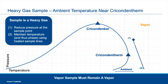For a heavy gas, you're somewhat closer to the phase curve. You can't just reduce pressure — you need to be careful not to cross into the two-phase zone. In this case, reduce pressure while also maintaining or slightly increasing temperature to stay away from the phase boundary.